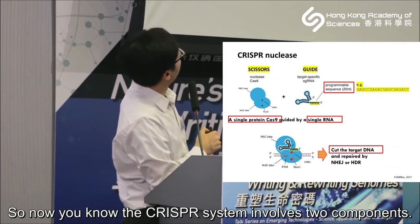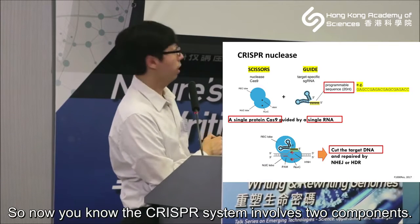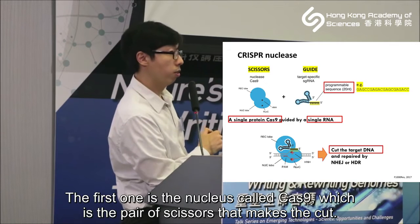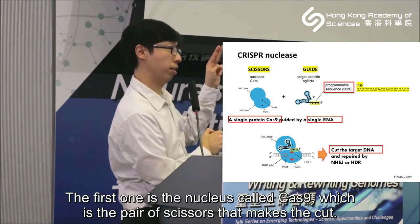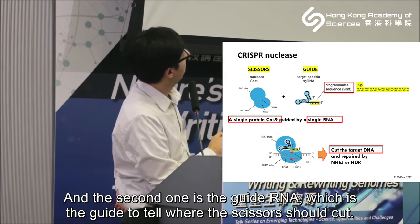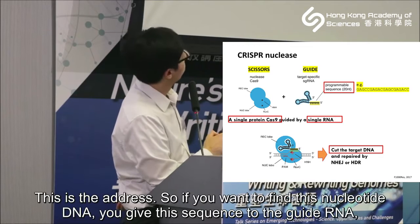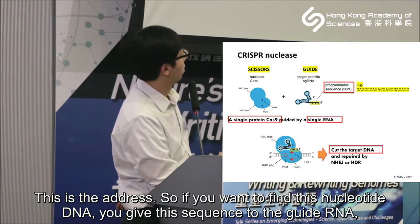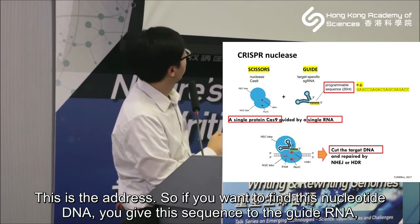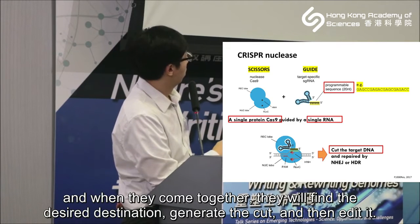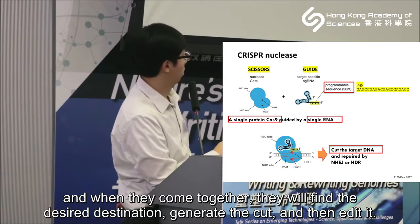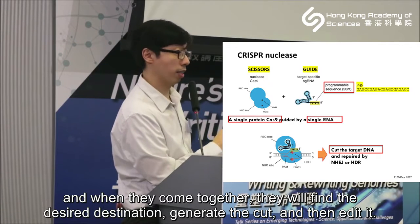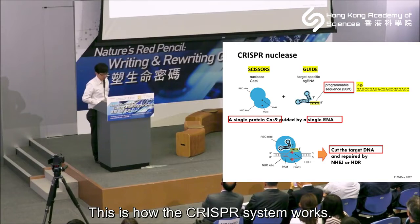The CRISPR system involves two components. The first is the nuclease called Cas9, which is the pair of scissors that makes the cut. The second is the guide RNA, which tells the scissors where to cut - this is the address. If you want to target a specific piece of DNA, you give that sequence to the guide RNA, and when they come together they will find the desired destination, generate the cut, and make the edit. This is how the CRISPR system works. The Cas9 protein grabs the RNA, reads it, and then goes to the target location.